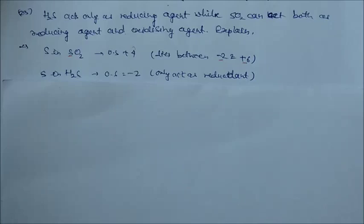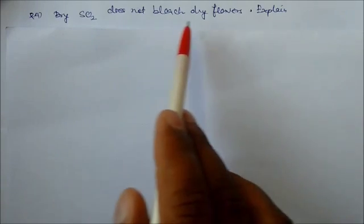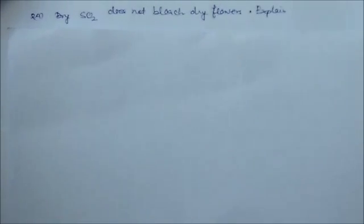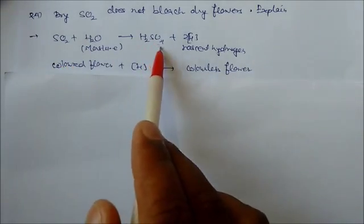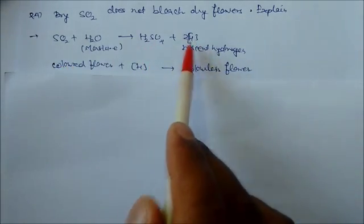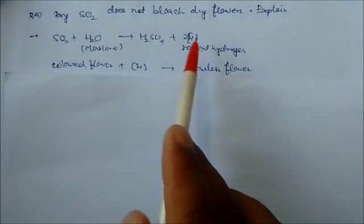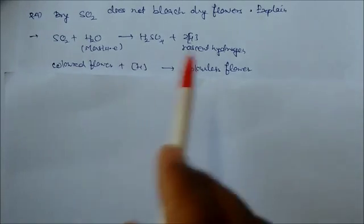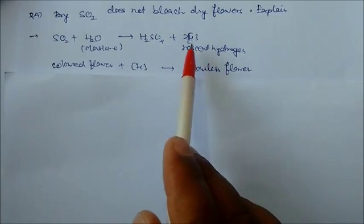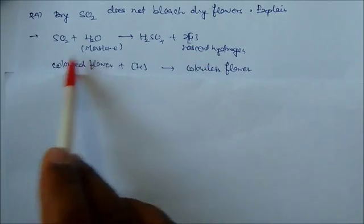Sulfur dioxide does not bleach dry flowers. Explain. Because SO2 in presence of water forms sulfurous acid plus nascent oxygen. This nascent oxygen is responsible for bleaching colored substances to colorless. This nascent oxygen reacts with any colored flower making it colorless. This is temporary bleaching.